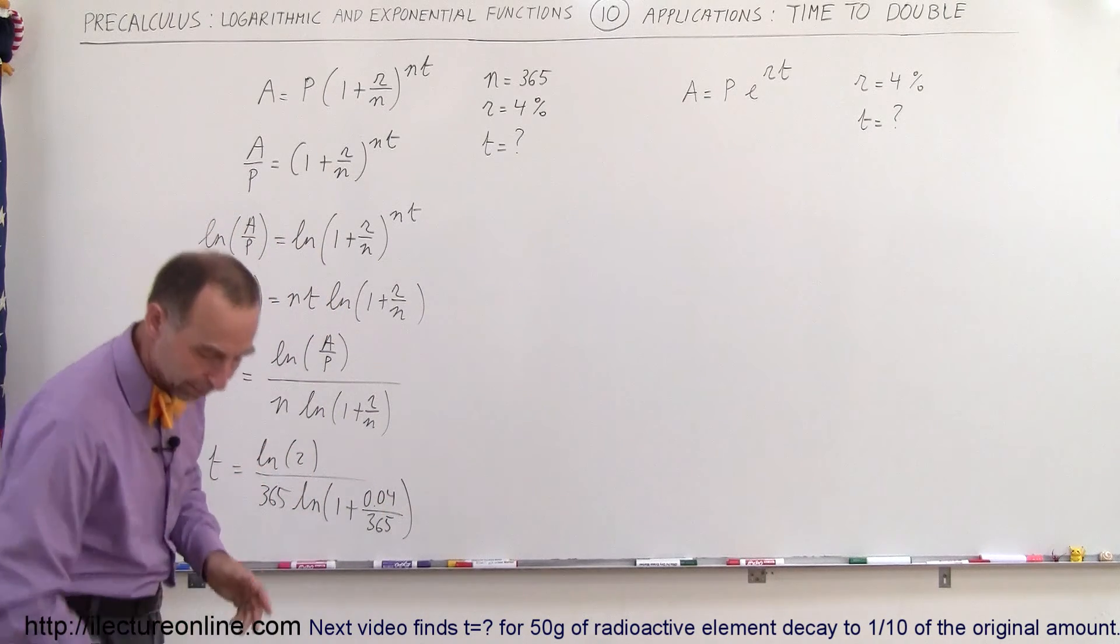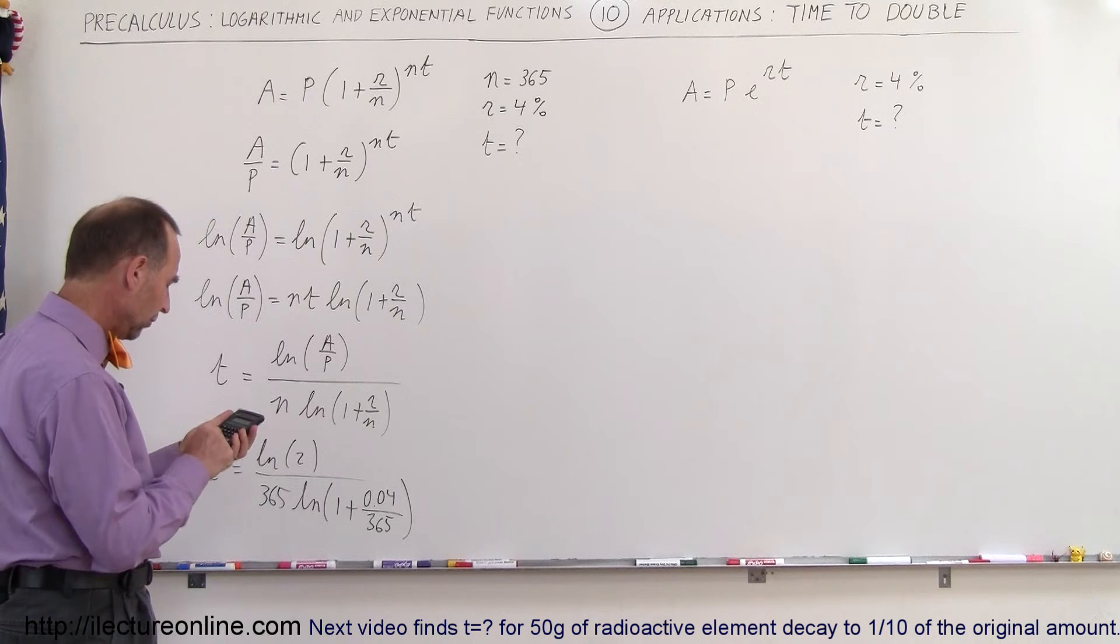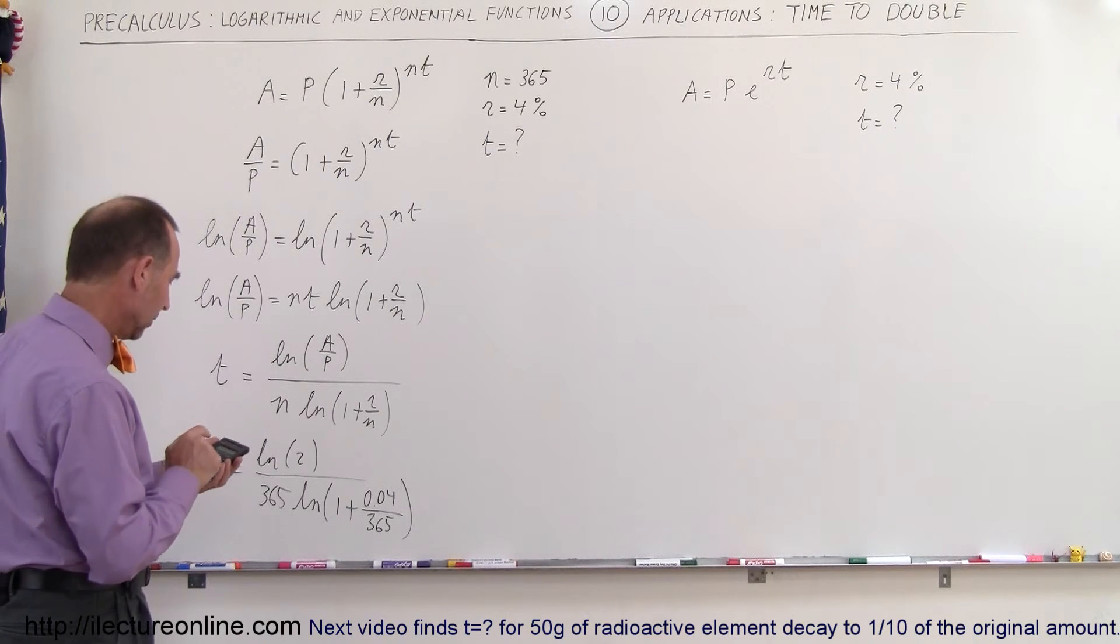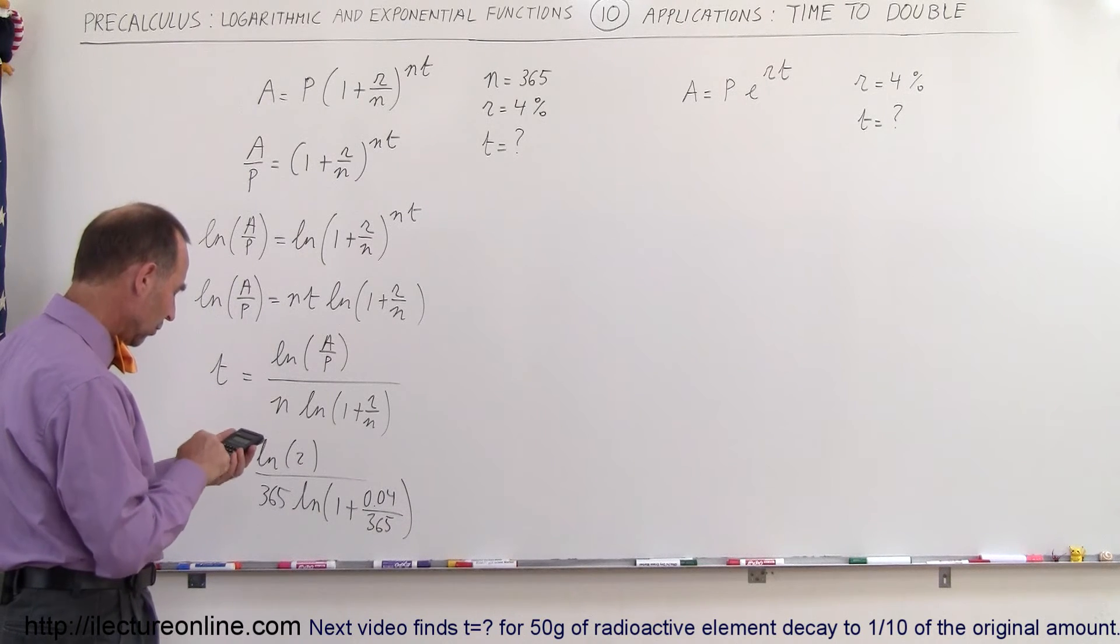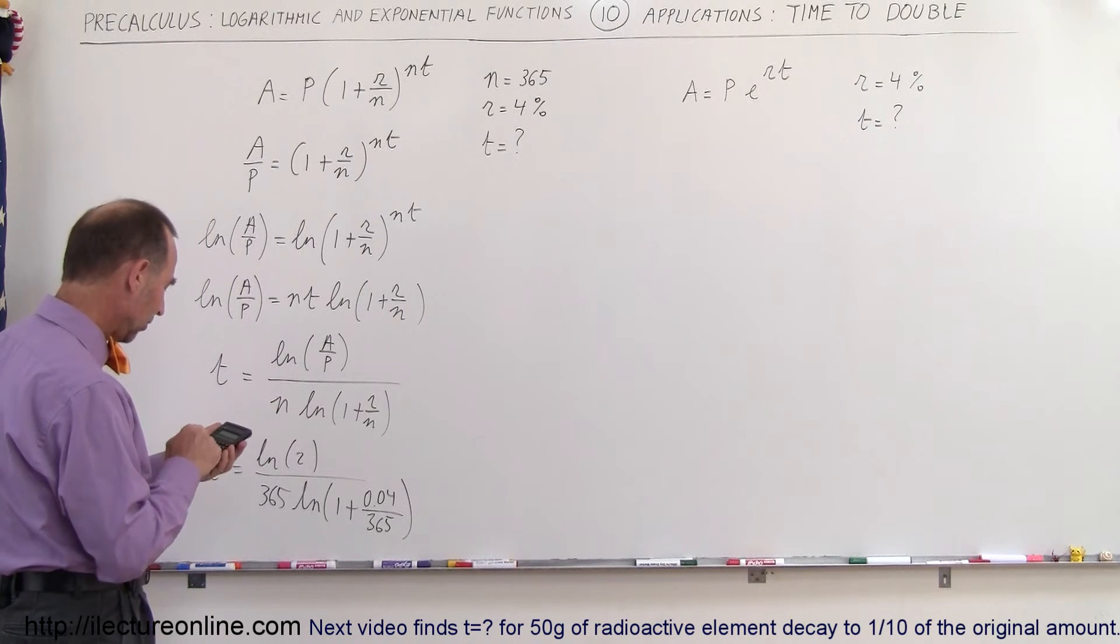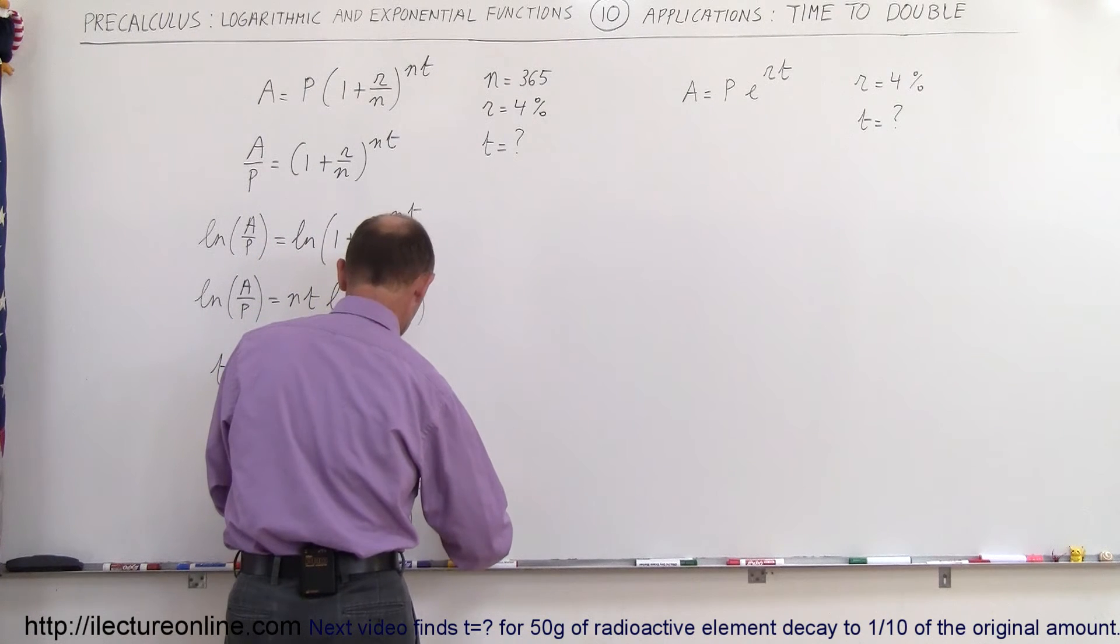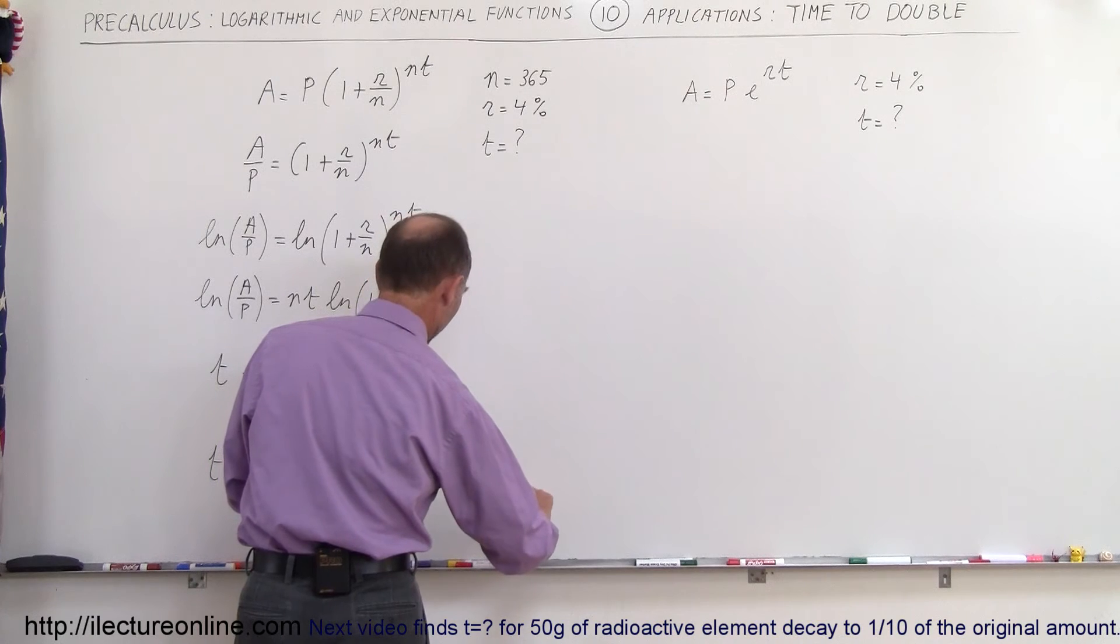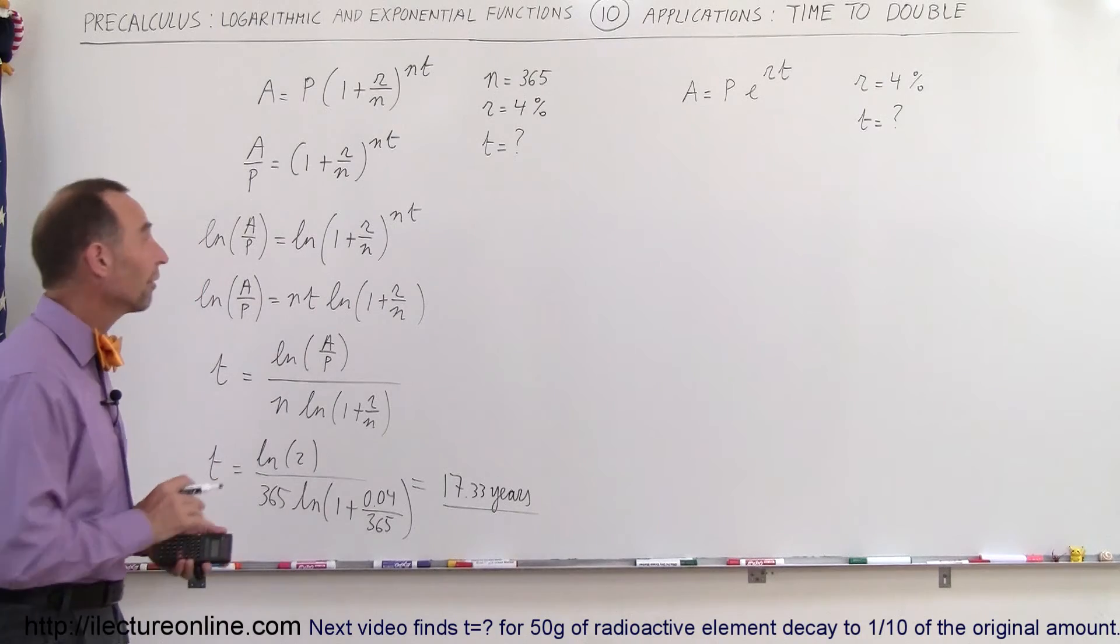Now we need a calculator. Starting with the denominator, we have 0.04 divided by 365, add that to 1, take the natural log of that, multiply that times 365, then hit the 1 over x button to bring it to the numerator, and then multiply that times the natural log of 2. So this is equal to, that will be in years, 17.33 years. So at 4% interest compounded daily will take 17.33 years to double your investment.